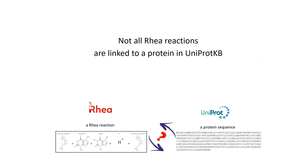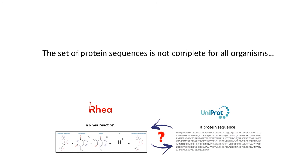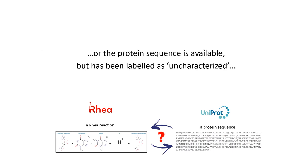It is important to note that not all RHEA reactions are linked to a protein in UniProt KB. Not all organisms have fully sequenced genomes, and the set of protein sequences in UniProt KB is therefore not necessarily complete for these, or the sequence could be available but has been labeled as uncharacterized by the genome consortium.